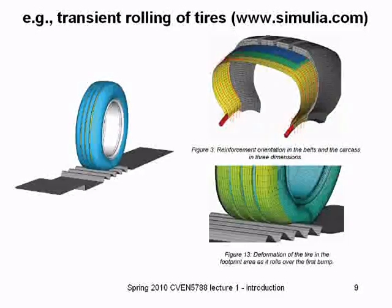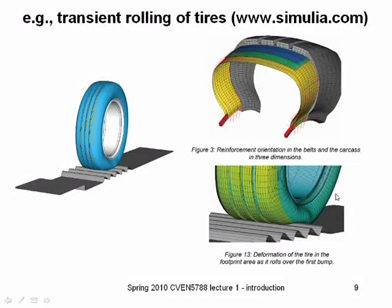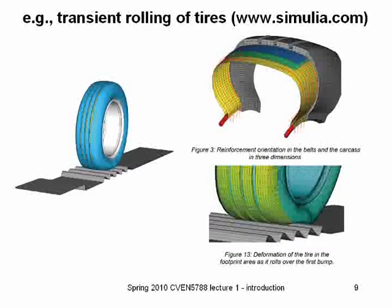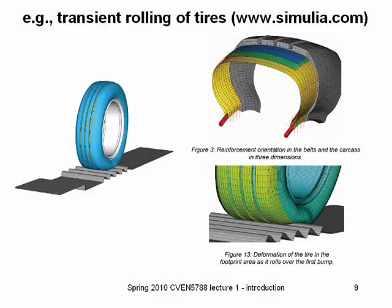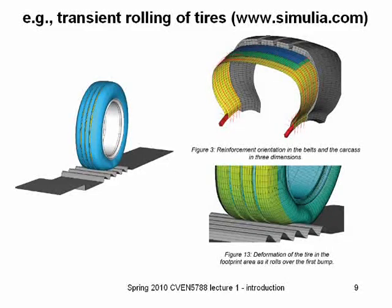Rolling of tires — Abaqus handles these hex finite elements. What makes rubber material complex is that it deforms in a finite strain context but undergoes isochoric deformation, meaning essentially zero volume change. This incompressibility constraint can cause standard finite elements to lock and give erroneous numerical results. Abaqus has various formulations implemented to handle that mesh locking and solve this type of problem.